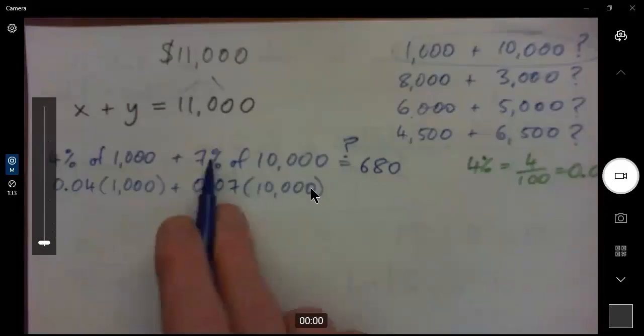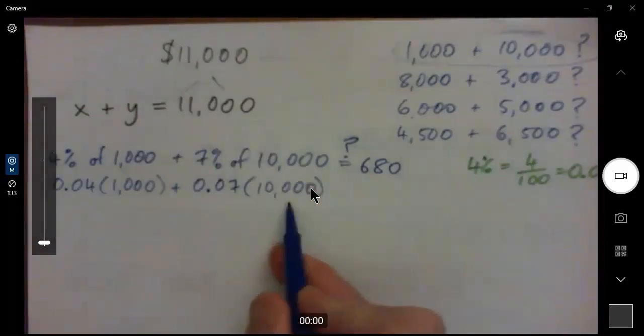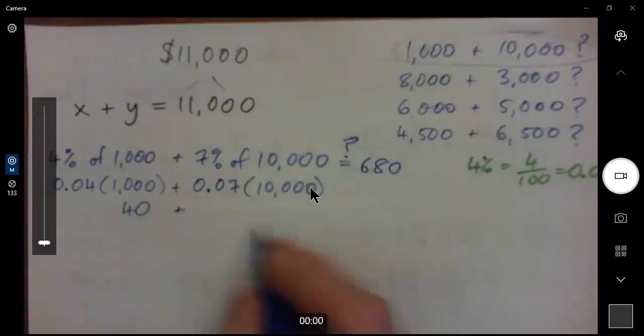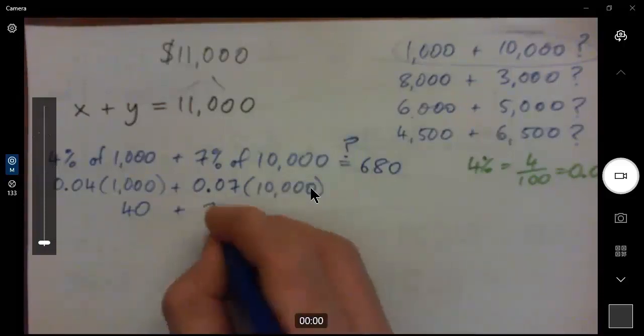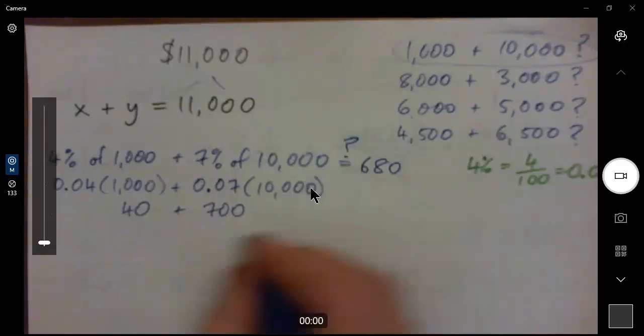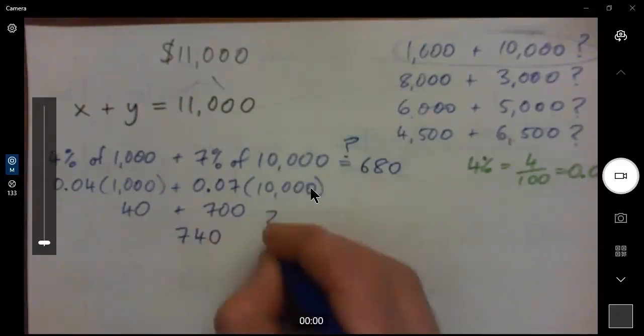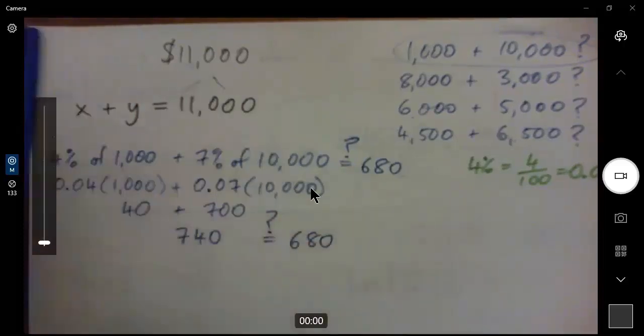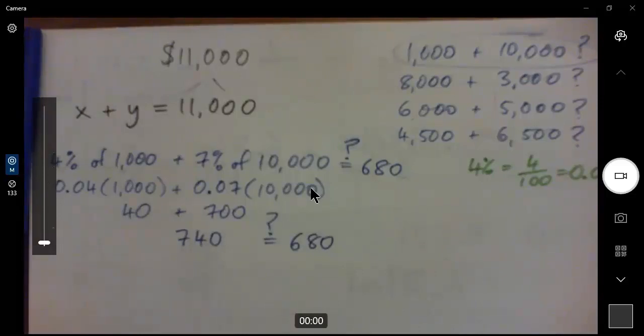So I want everyone to remember that. And then the next thing is, if I was getting 4% of $1,000, of means multiply, I'd go 0.04 times $1,000. If I was getting 7% of $10,000, I'd go 0.07 times $10,000. And this, by the way, would be 40, and this would be 700. And so that would make 740, right? And is that equal to 680? No.